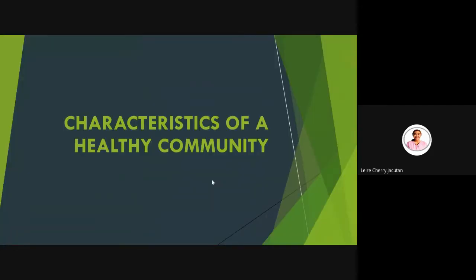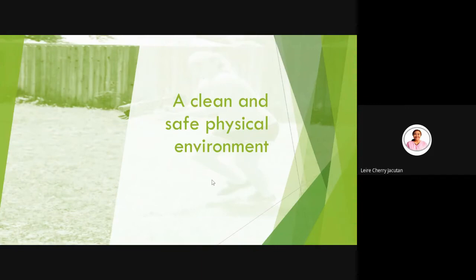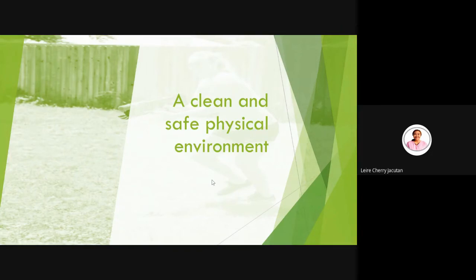So what are the characteristics of a healthy community? How can we say that the community we belong to or live in is healthy? We have various characteristics that serve as our measuring rod. First is a clean and safe physical environment — is the place we live in clean? Is it safe with no hazards around, peaceful and quiet? If the place we live in is clean and safe, we can say that place is a healthy community.